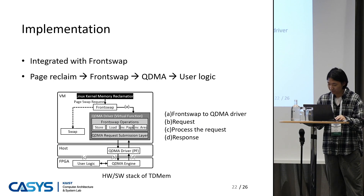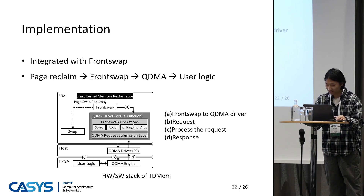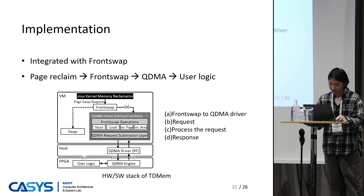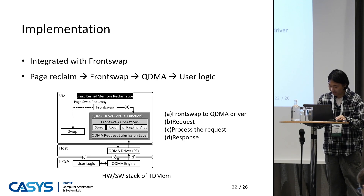This shows the actual implementation of TDMEM, from memory reclamation to delivering requests to the engine. TDMEM is tightly integrated to the virtual memory system of the Linux kernel by supporting the operations of FrontSwap, which is an interface used to redirect swap operations to other subsystems. When a page is requested to be swapped, it is forwarded through FrontSwap, denoted as A. Then B, the QDMA driver sends the request to user logic for processing. And C, the user logic processes the request, the response is generated by the donor engine, and then forwarded to the guest OS.